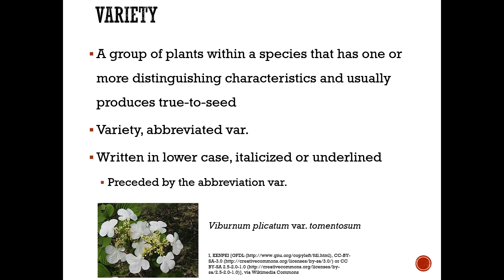A variety of plants is a group within a species that has one or more distinguishing characteristics and can produce true to seed. It is written with the abbreviation VAR in lowercase, italicized or underlined. For example, Viburnum plicatum variety tomentosum.